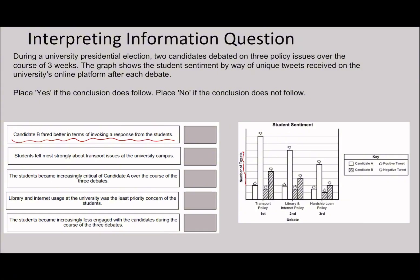So candidate B fared better in terms of evoking a response from the students. Just by eyeballing it, you can see that for transport policy, candidate A is going to have way more tweets. This one's a bit closer but still going to have more, and here it's still going to have more. I would say the first one is going to be no because there's more tweets for candidate A in regards to each of these three key ideas.